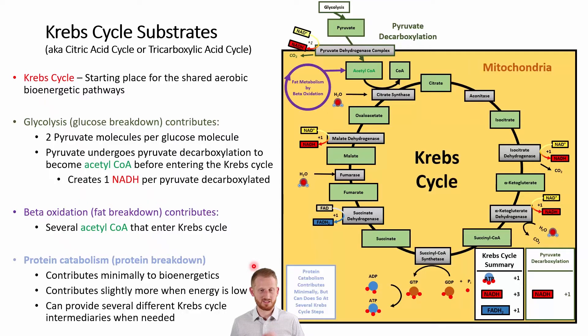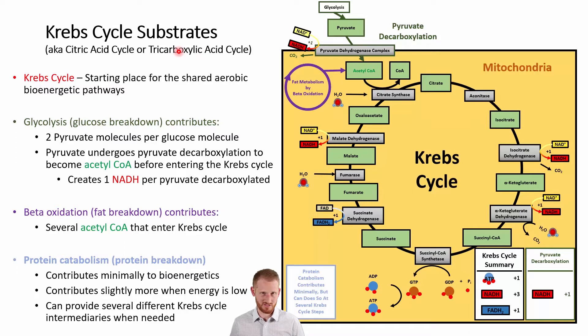In this video we're going to be talking about the two parts of aerobic metabolism — specifically the Krebs cycle and the electron transport chain. Some other names for the Krebs cycle would be the citric acid cycle and the tricarboxylic acid cycle, often abbreviated as the TCA cycle. If you see any of these in textbooks or other sources, they're all the same thing.